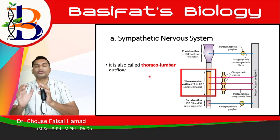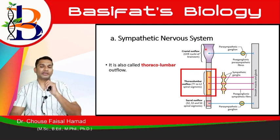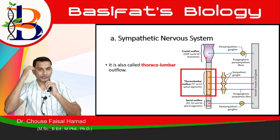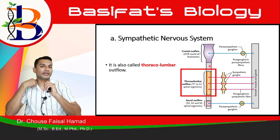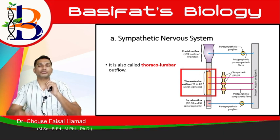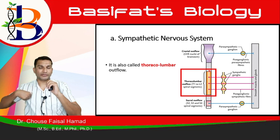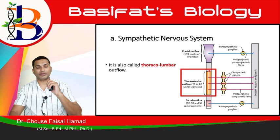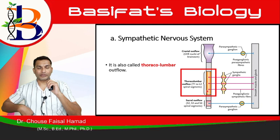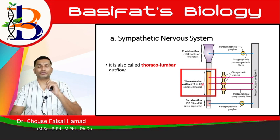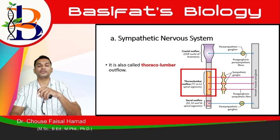The thoracic region is where the ribs start — thoracic 1 to 12 — and after that comes the lumbar region: L1, L2, L3, L4, L5, but only up to L2. So the sympathetic nervous system originates from the thoracic and lumbar region, which is why it is called thoracolumbar outflow.